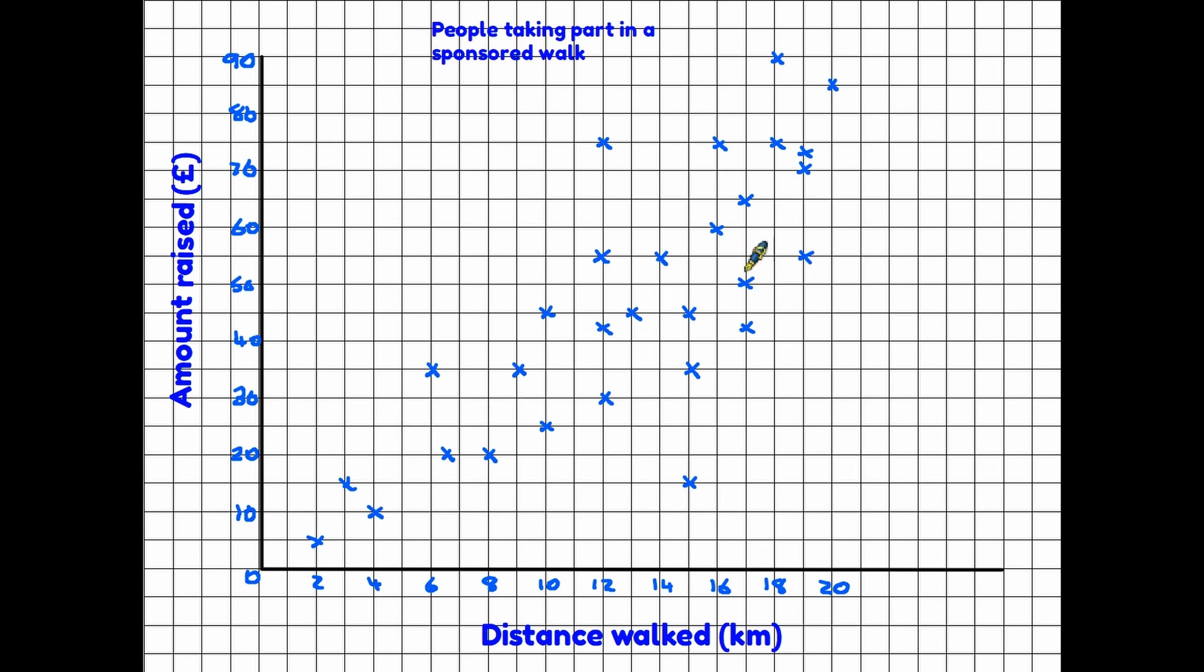Once we have done that, you may then be asked a further question. This next stage is important. If you have decided on a correlation, in this case a positive one, and you are going to be asked questions about other walkers, the first thing you do is you put in something that we call the line of best fit. In other words, if you were to draw a line along the center of the pattern of crosses, where would that line be?